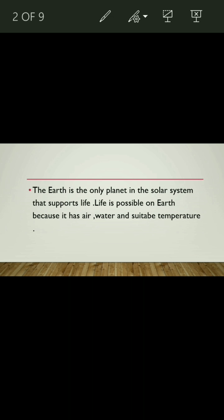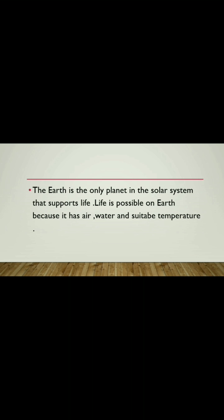The Earth is the only planet in the solar system that supports life. Life is possible on Earth because it has air, water and suitable temperature. The solar system consists of the sun, eight planets along with their satellites and other celestial bodies. Among the eight planets of the solar system, the Earth is the only planet where life exists.